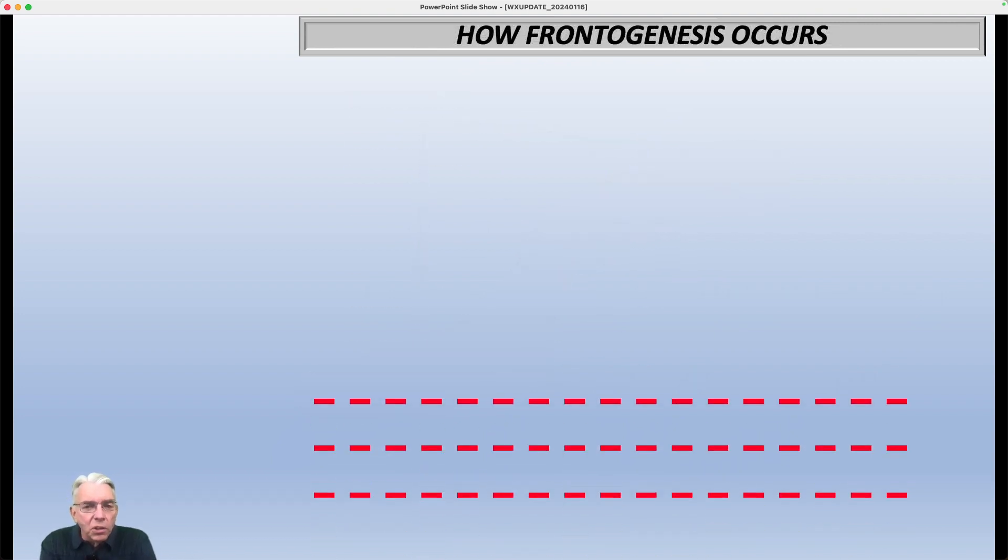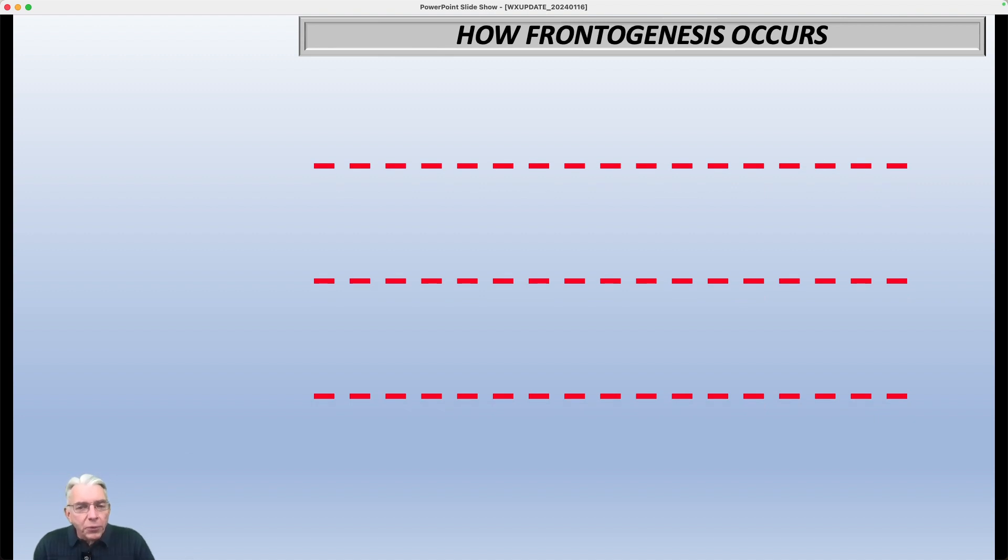So how does this all occur? Well, I put three isotherms up here. These are three lines of equal temperature. So you can assign values if you'd like to, like maybe this one here is 25, and this is 30, and this is 35. It can be anything you want, but these are lines of equal temperature.